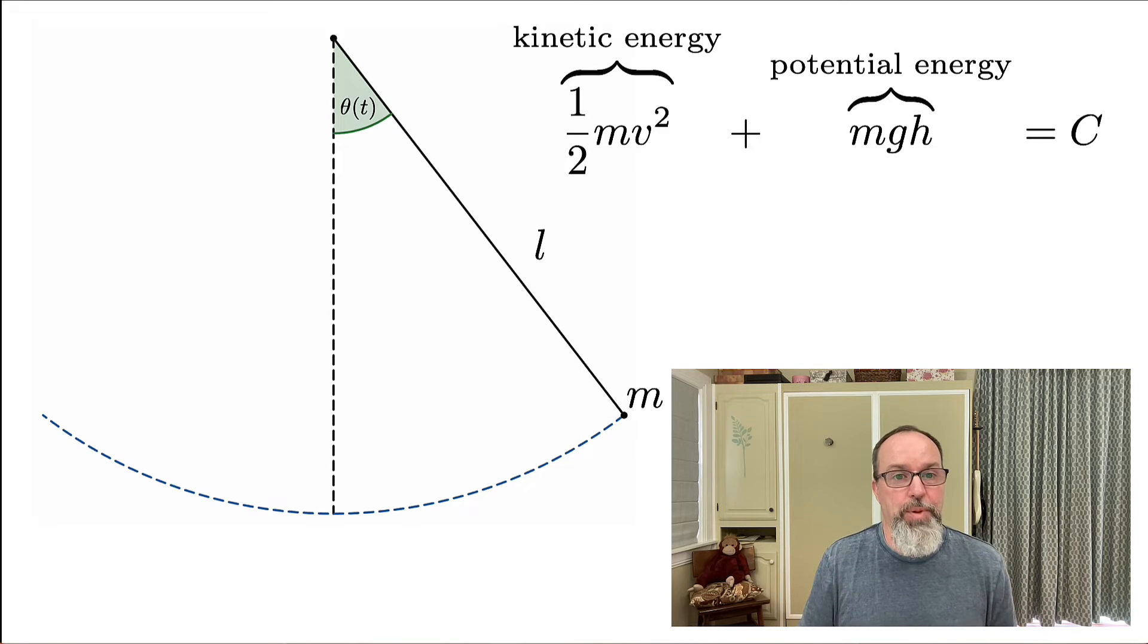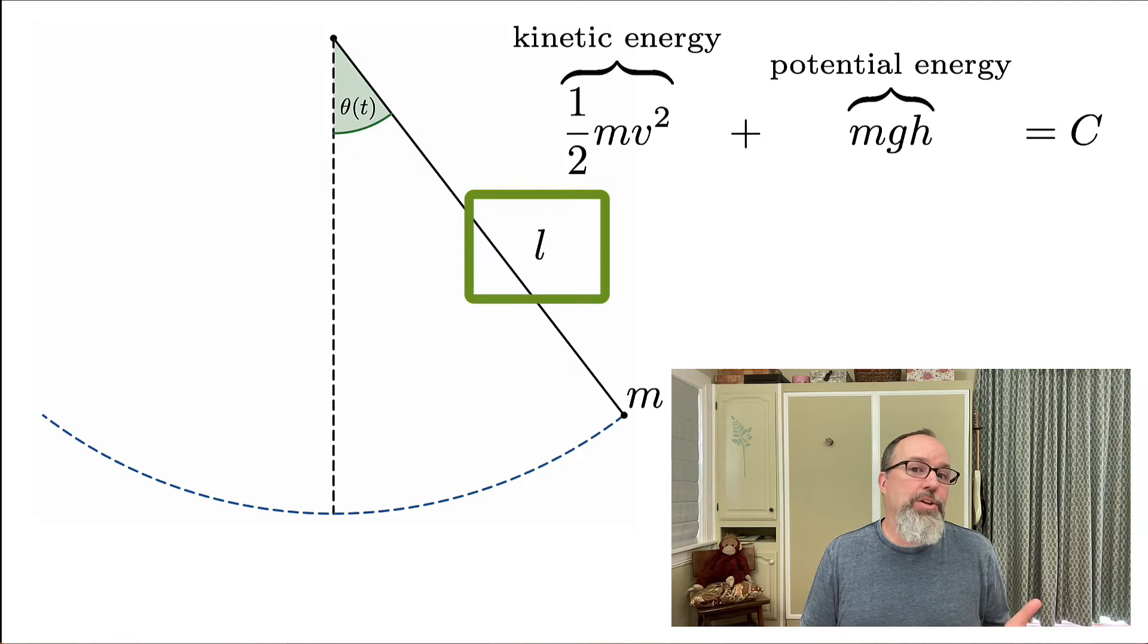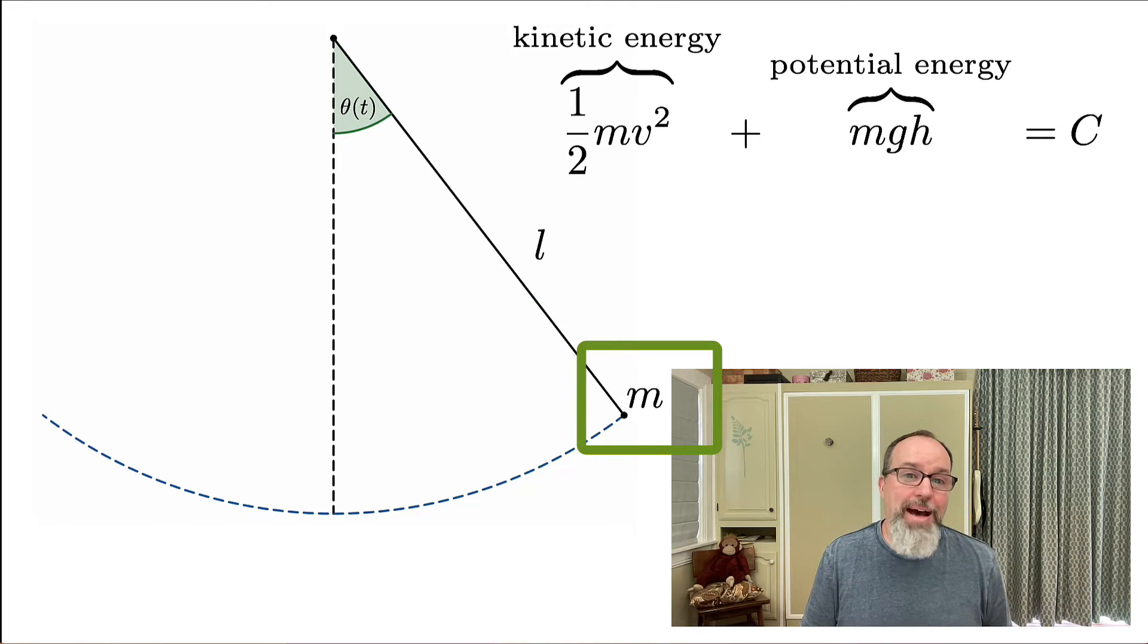The angle that the pendulum makes with the vertical is θ(t)—a function because it's changing. L is the length of the string holding the pendulum. We'll assume the string is massless, and it turns out that even if it isn't, as long as the mass at the end is significantly more than the string, this is okay for our derivation. The mass m is the mass at the end of the pendulum. Let's start by looking at the kinetic energy.